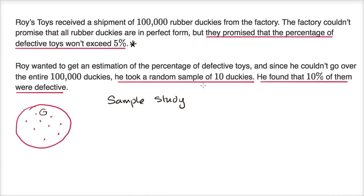Well, that isn't a reasonable conclusion, because this is a small sample. Think about it — he could have sampled five duckies, and if he just happened to get one of the defective ones, he would have said maybe 20% are defective. What he really needs to do is take a larger sample. Whenever you're sampling, there's always a probability that your estimate is not going to be close to the actual parameter for the population. But the larger your sample, the higher the probability that your estimate is close to the actual parameter. And 10 is just too low.